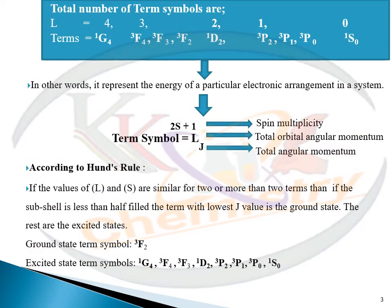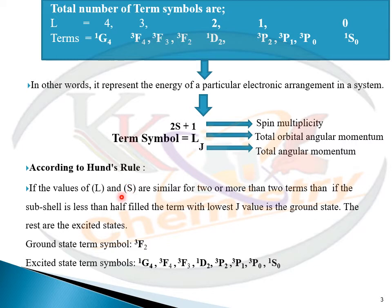The number of term symbols derived here for the d² system through the pigeon-hole diagonal method are the same term symbols as calculated earlier. The term symbol is actually a combination of spin multiplicity, total angular momentum, and total spin angular momentum.